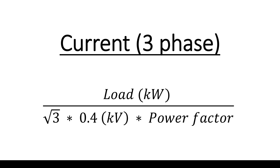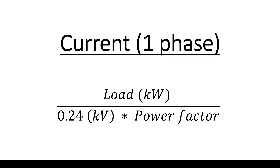For power factor, we use 0.8 as a standard worst-case assumption, since most projects have capacitor bank power factor correction. We assume the power factor may drop to 0.8 as a worst case. In practice it will usually be higher, because the capacitor bank will kick in to correct the power factor.